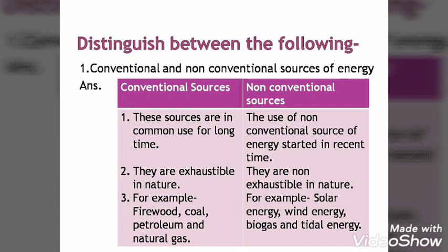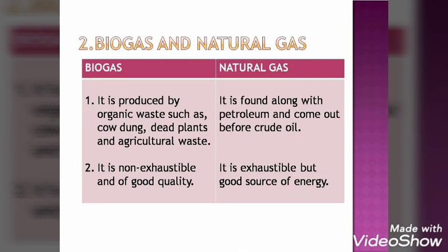The second distinction is between biogas and natural gas. Biogas is produced from biodegradable waste — waste from cattle, dead plants, and animals — which is decomposed and converted into a gaseous fuel. Natural gas comes with crude oil when petroleum is being extracted. Biogas is non-exhaustible and a good non-polluting source of energy. Natural gas is an exhaustible source — it is a good source of energy, but it will be exhausted and cannot be renewed.